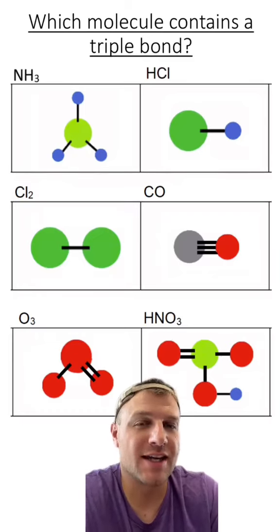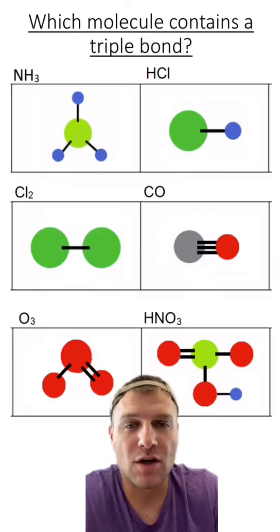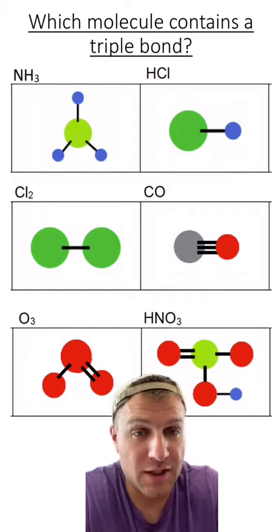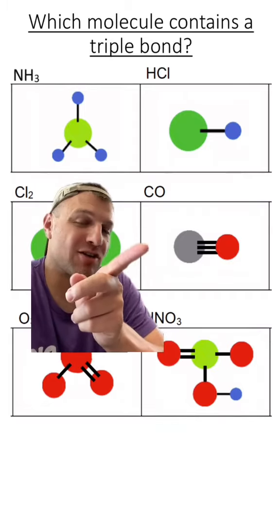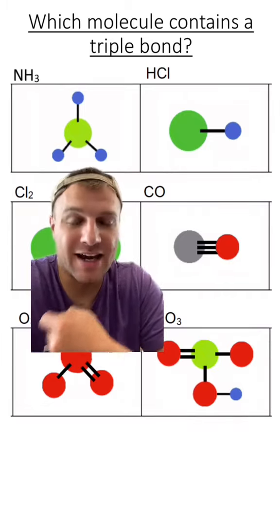Next question, which molecule contains a triple bond? Triple bonds occur when there are three chemical bonds between two atoms. The answer here is carbon monoxide. You can see three black lines between the different atoms.